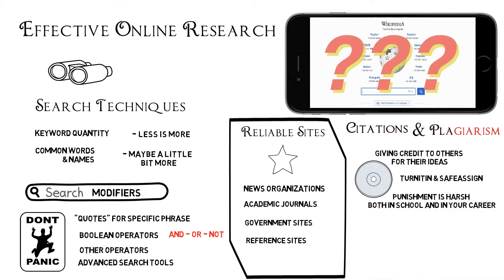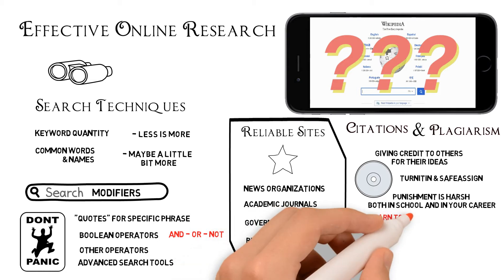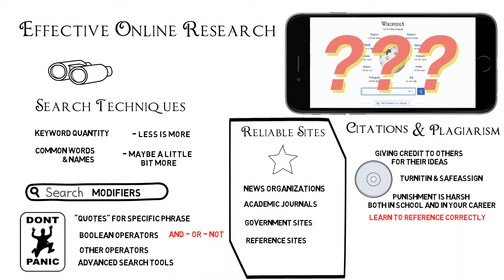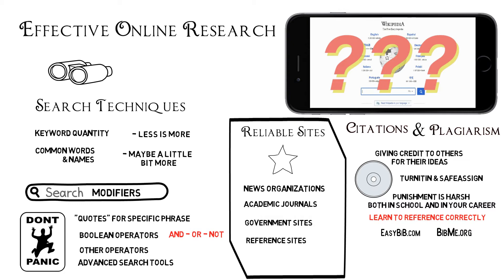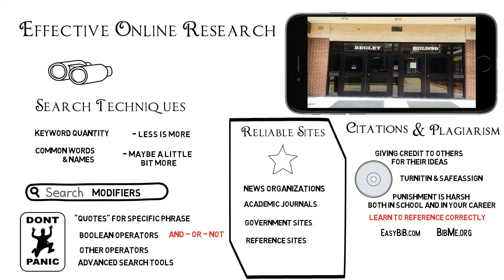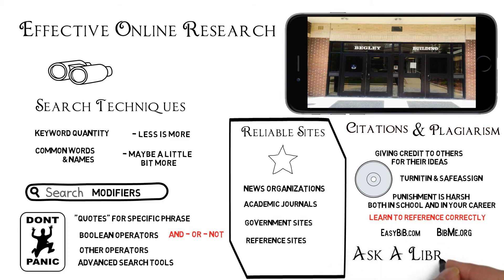To avoid plagiarism, it is imperative that you learn to properly paraphrase and cite your references. If you need help creating proper citations, you can use free sites such as EasyBib.com or BibMe.org. Plagiarism can be very serious to your career as a student and beyond. Luckily, Schenectady County Community College has a dedicated staff of librarians who are happy to help you. All you have to do is ask, and you'll find that they are a powerful resource.